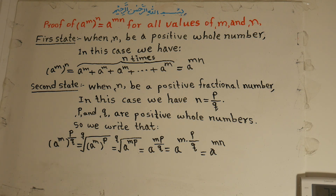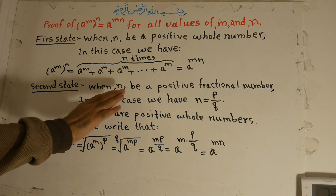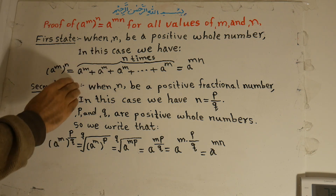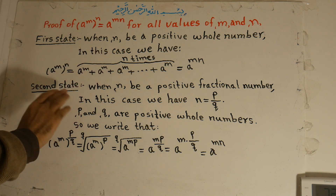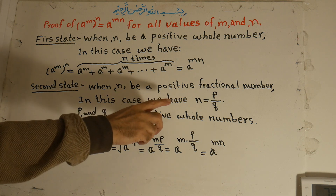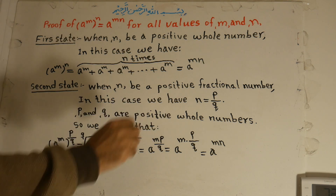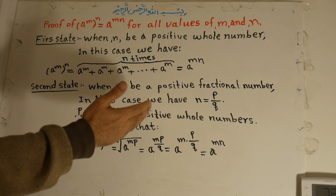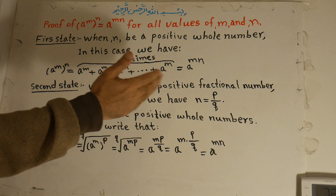Second case: when n is a positive fractional number. In this case, n is equal to p over q, meaning n is a fraction.